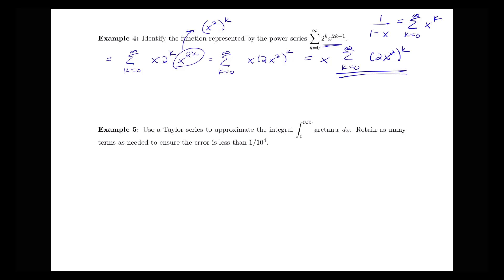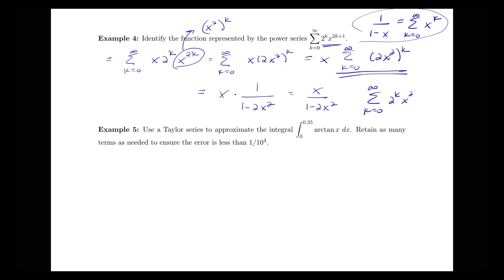This part looks exactly like our series for 1 over 1 minus x. So the function represented by this power series of 2 to the k times x to the 2k plus 1 will be x times 1 over 1 minus 2x squared, substituting 2x squared for x on both sides. So the final answer is that the sum from k equals 0 to infinity of 2 to the k times x to the 2k plus 1 equals x over 1 minus 2x squared.